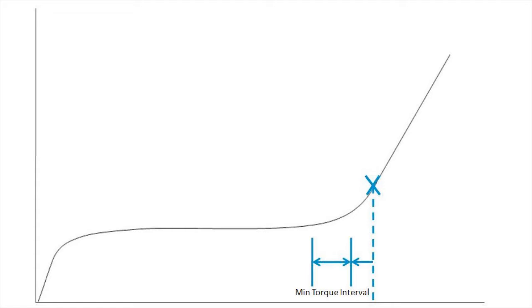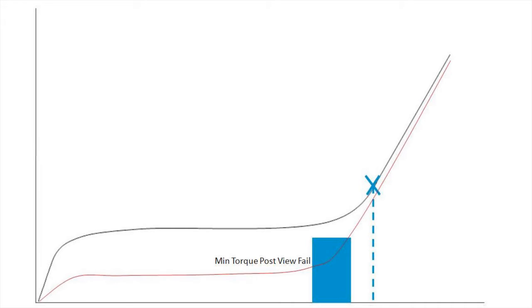The second interval is the min torque interval. Similar to the max torque interval, a torque level is specified for the min torque. In this case, if the torque passes below the min torque level, the fastening will fail on post-view torque.